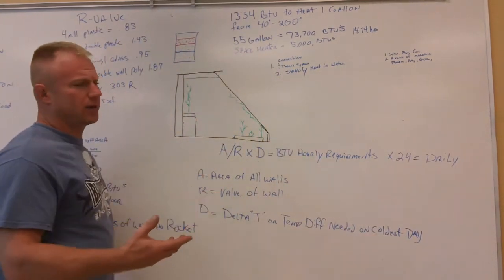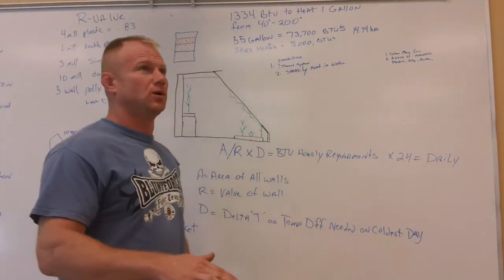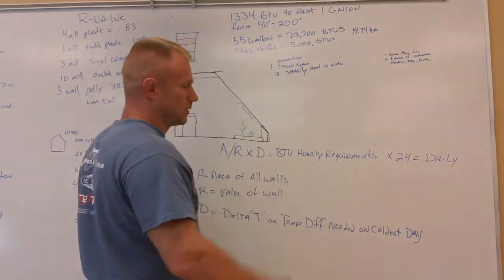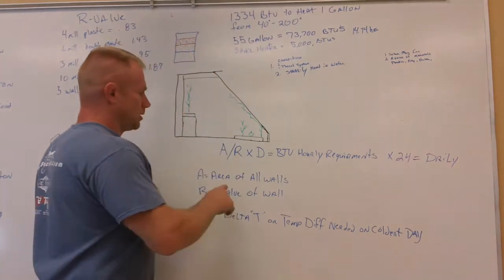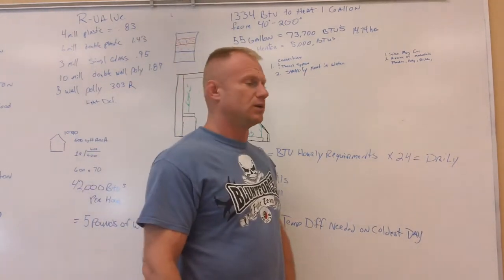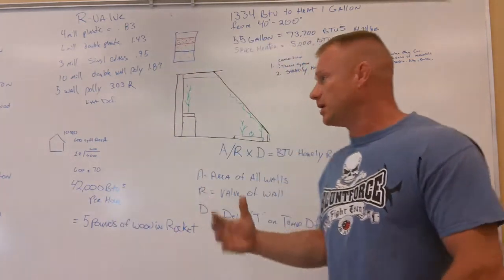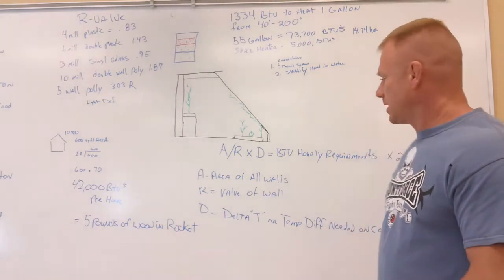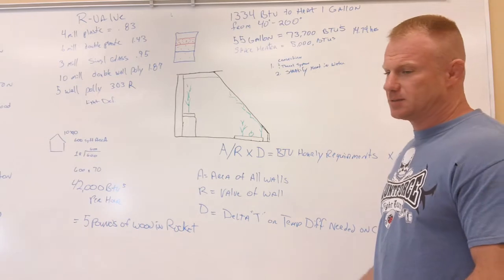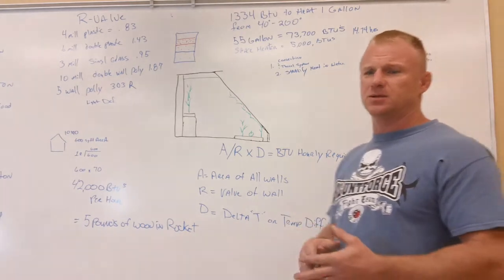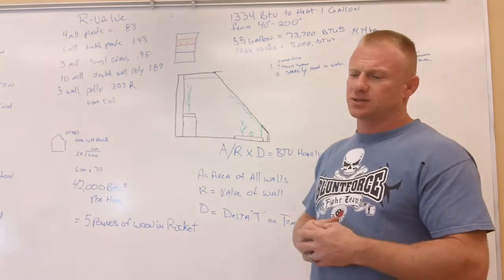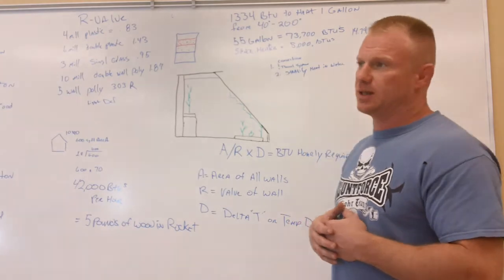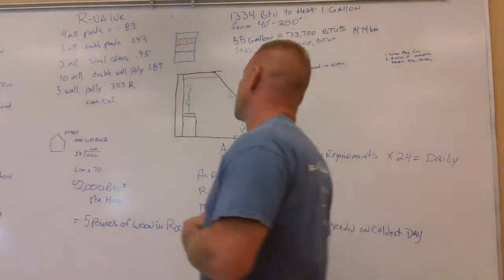Area equals all areas of the wall, so it wouldn't equal the floor. It would equal all walls and the roof if the roof is whatever material it is. The R value would be of each particular wall. I've got some R values up here. I don't know if anybody knows or is familiar with what the R value of glazing choices are for greenhouses. And then the delta T - what is a delta T? Delta T would be the temperature difference you need on your worst day. So let's say your worst day got down to zero and you wanted to keep your plants 70 degrees. Your delta T would be 70 degrees, your temperature difference on your worst day.